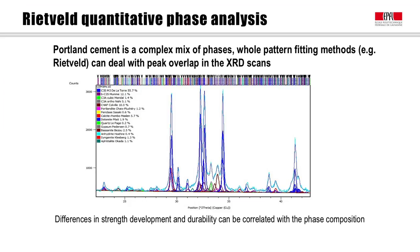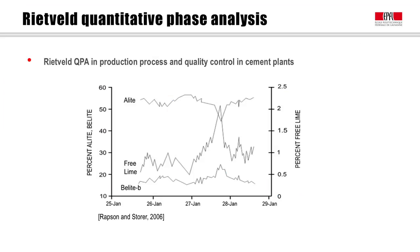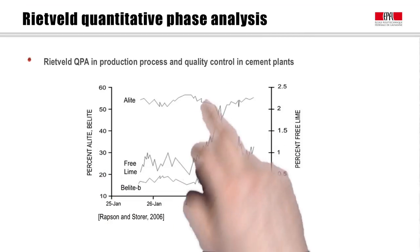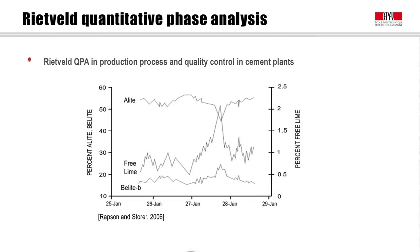Since phase composition — such as alite content — can be related to properties such as strength development or durability, XRD analysis by the Rietveld method has found widespread use in both cement research and production quality control. For instance, this figure shows a monitoring of alite, belite, and free lime contents by XRD during a period of Portland cement production at an industrial site. You can clearly see that at some point there was a temperature lowering in the kiln, resulting in a drop in alite levels, free lime coming up, and belite increasing as well.